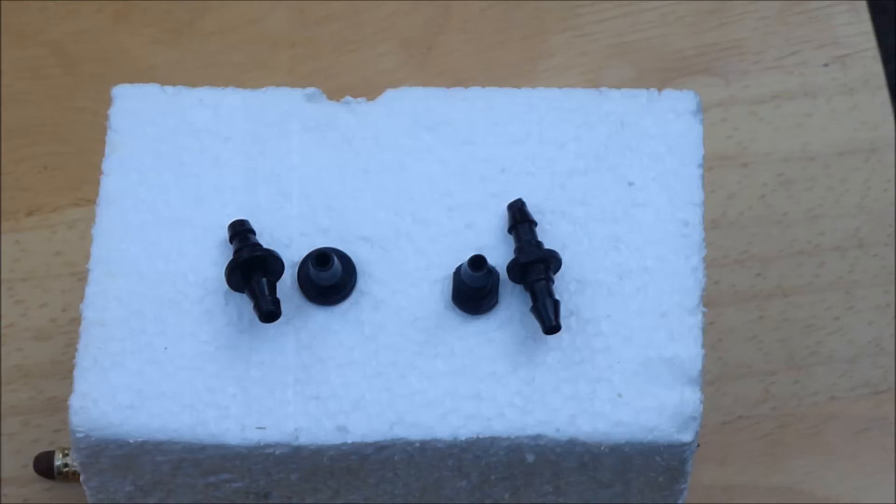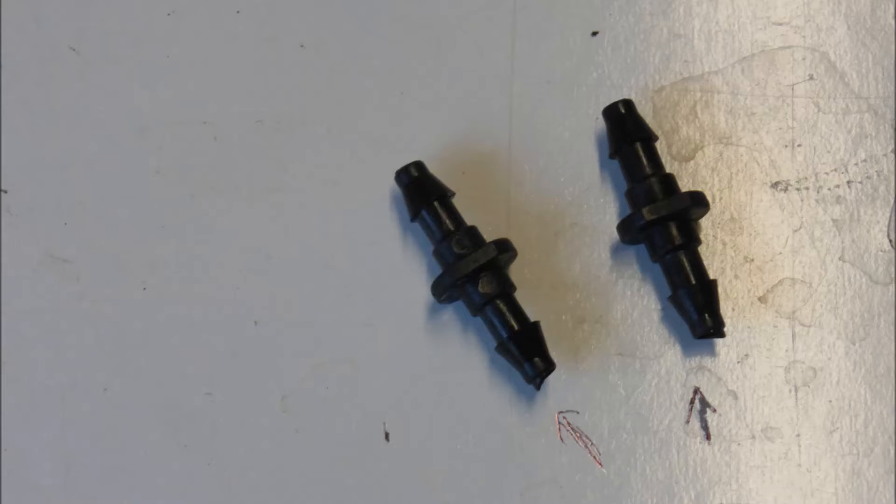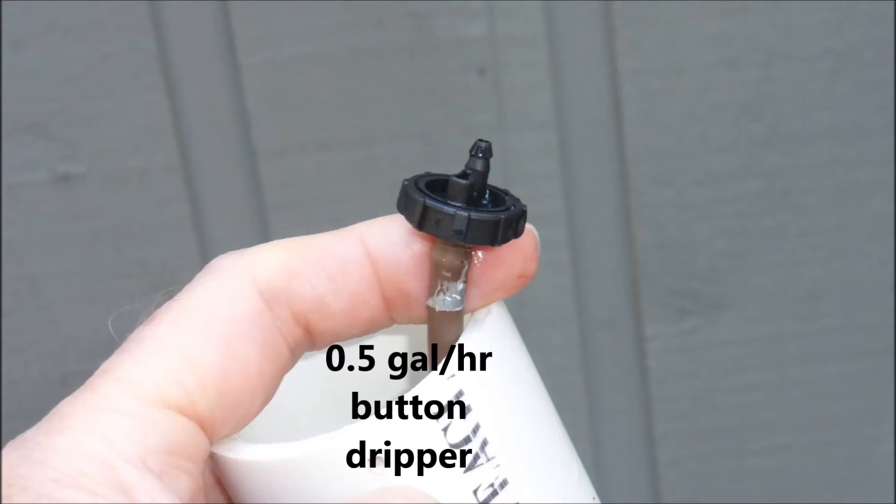Plastic microtubing connectors can serve as nozzles. They have a 3mm orifice and a flat bottom. Nozzles need to have a flat bottom. Nozzles with manufacturing imperfections such as this remnant flap will not seal properly. Button drippers may also work well as nozzles.